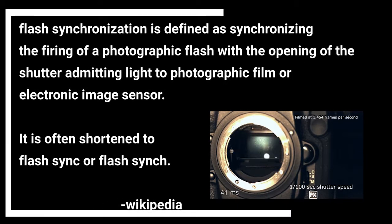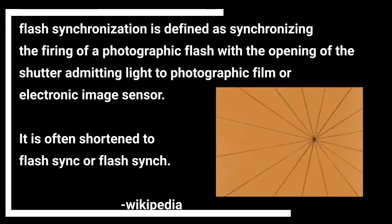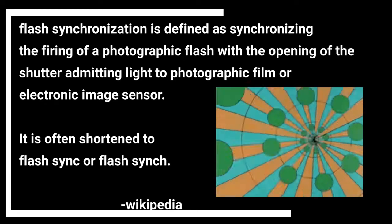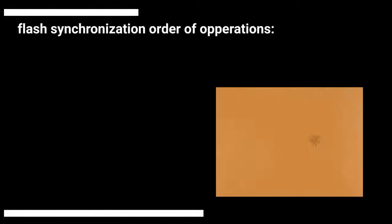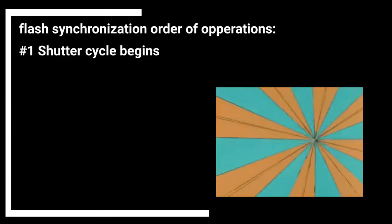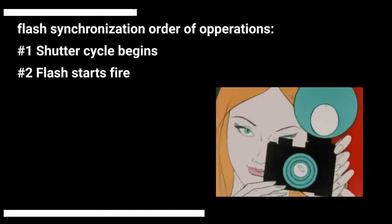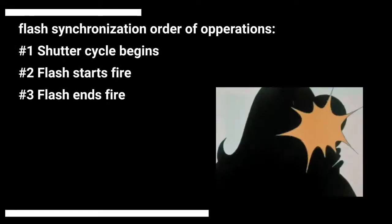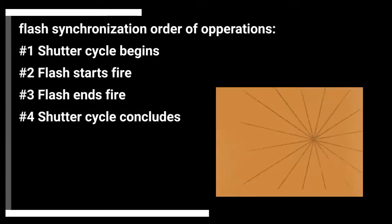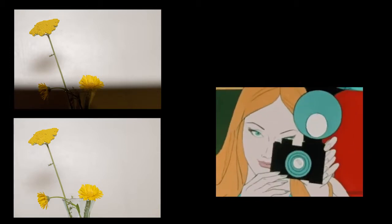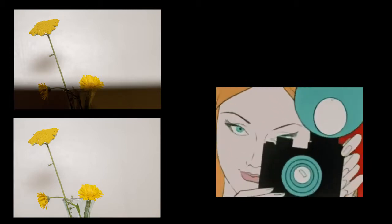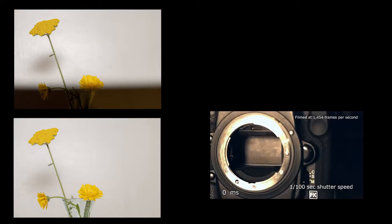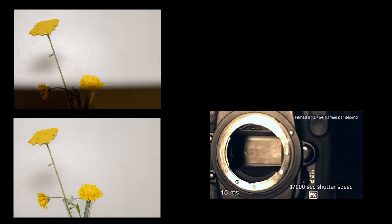Next let's discuss flash synchronization, sometimes called flash sync. It's defined as the synchronization of the firing of the photographic flash at the same time the shutter is open, allowing light from the flash to reach the photosensor. There's an order of operations: first the shutter cycle begins, next the flash starts to fire, then the flash ends its fire, and last the shutter cycle concludes. If this doesn't work out right you get weird results — like the shot on the top left where there's a line at the bottom because the shutter was closing before the flash completed its fire. That dark part wasn't exposed with the flash, only with ambient light, whereas the bottom shot is fully exposed with the flash.